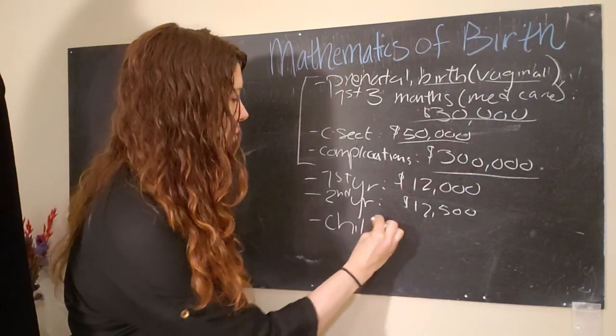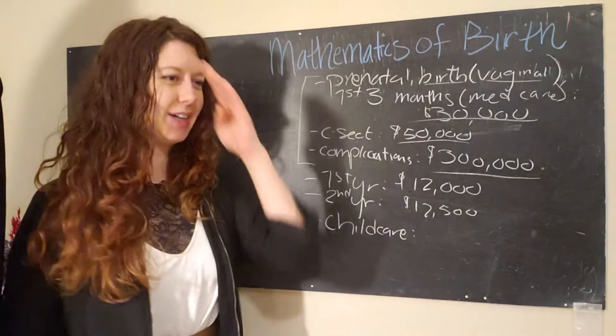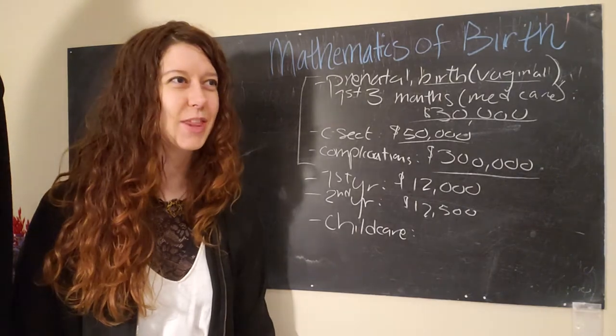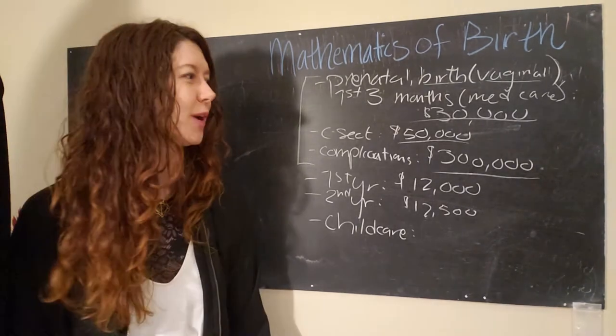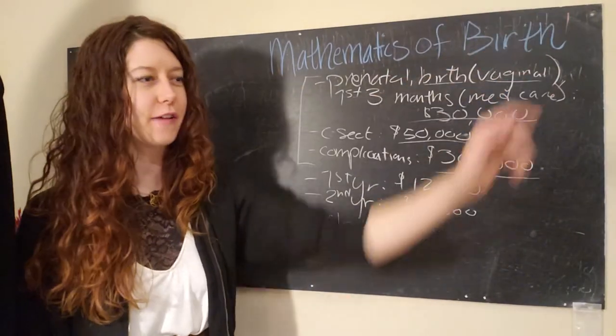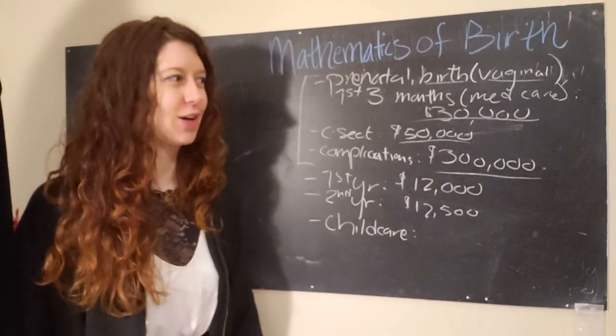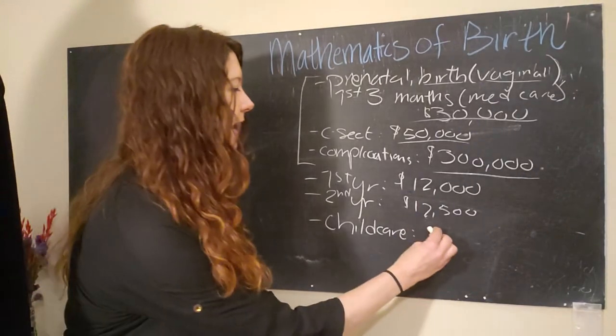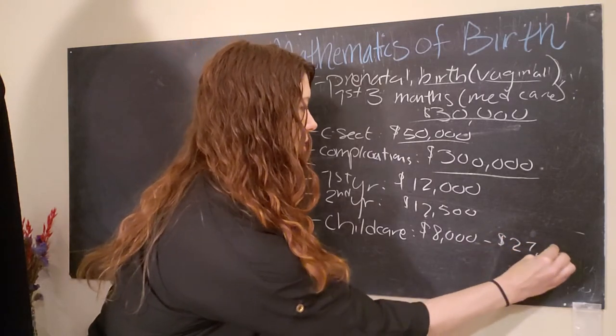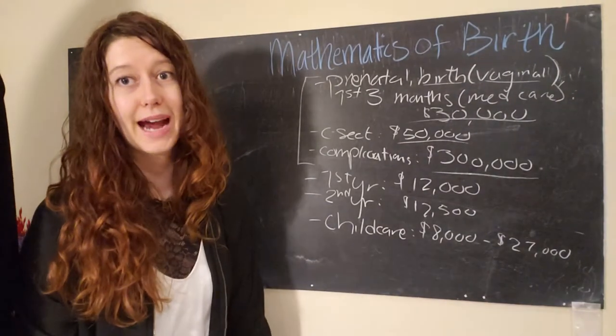And then, none of this includes child care. And let's be real, someone's gotta watch after that little tyke. Because my nephew is two and I love him to death, but boy is that kid fast and you really gotta keep your eye on them because he will be pew off and swimming in the pond if I don't pay attention to him. So, child care is very important and it ranges in cost between $8,000 and $27,000.